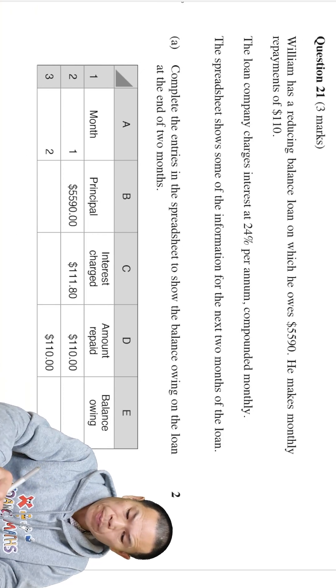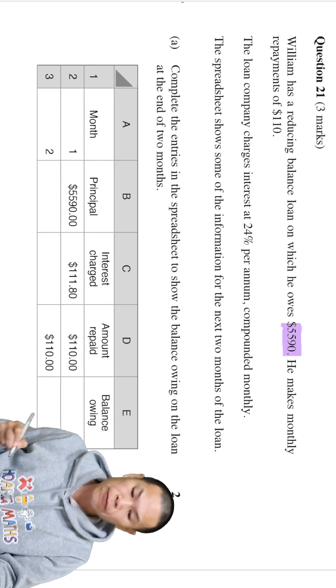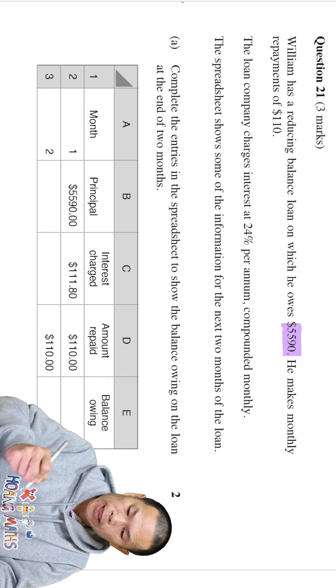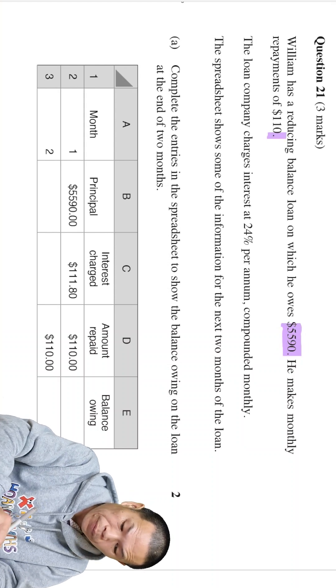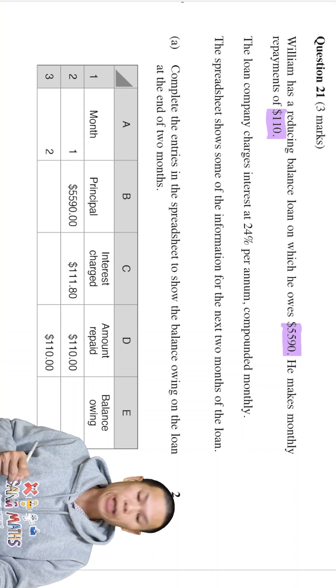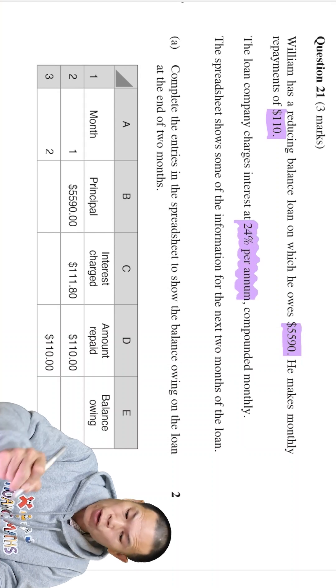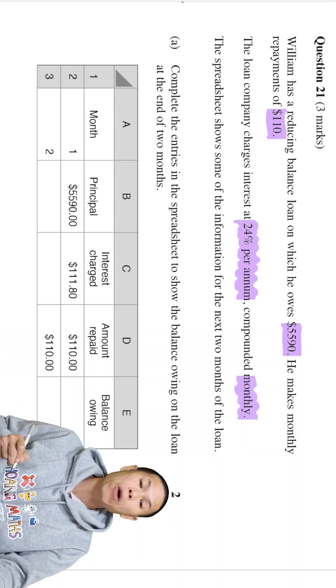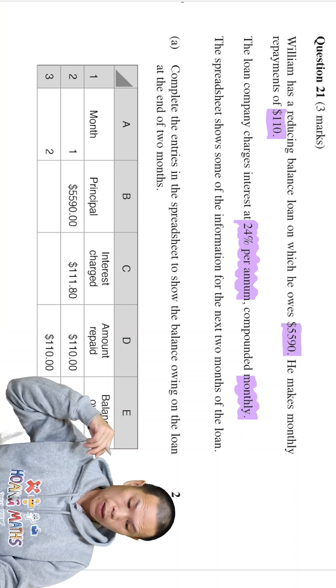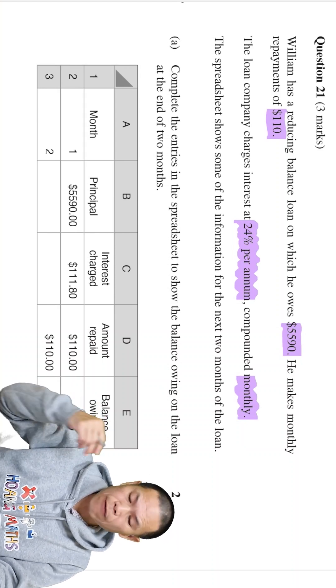First of all, we know that William owed $5,590 and his monthly repayment is this. And the interest rate is 24% per annum but compounded monthly. So keep that in mind, and that means William pays interest every month.